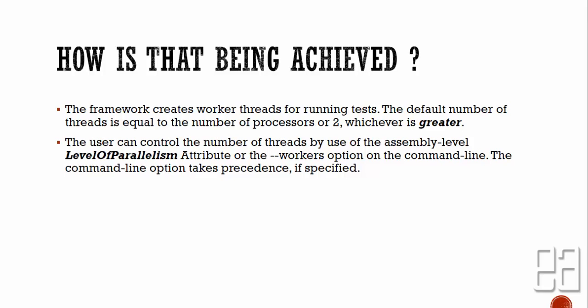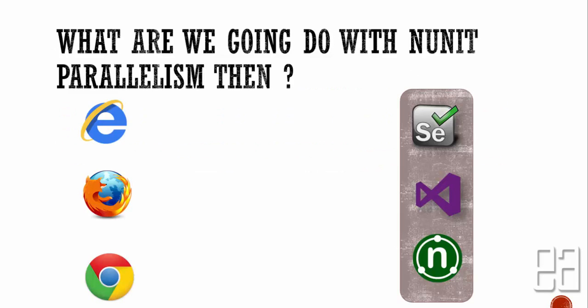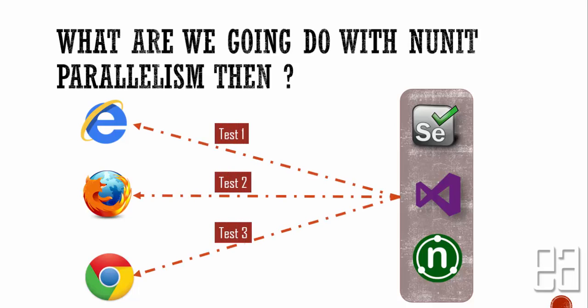We are not going to discuss the command line option in this video, but if you set the --workers option on the command line while executing NUnit tests, you can run tests with that level of worker threads. What we are going to do is execute Selenium C# tests using the NUnit framework to spawn tests for multiple browsers — Chrome, IE, and Firefox. We'll write three different classes and execute the same test in multiple browsers simultaneously in parallel.